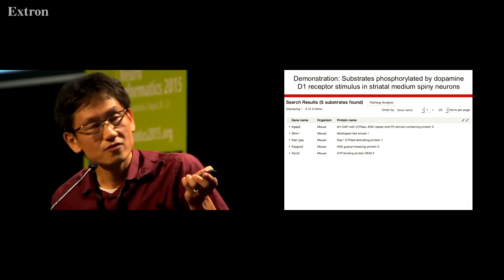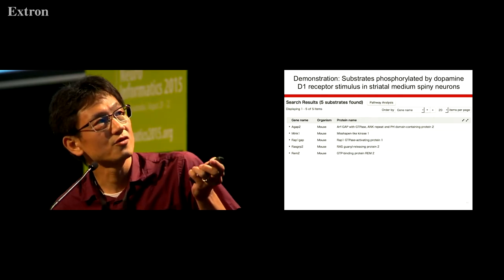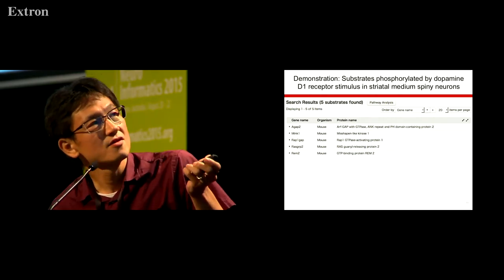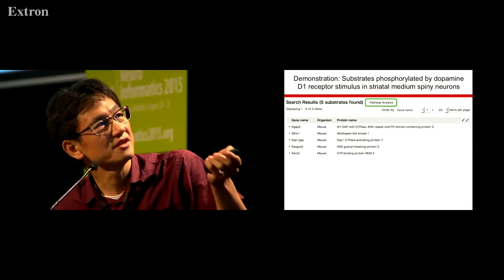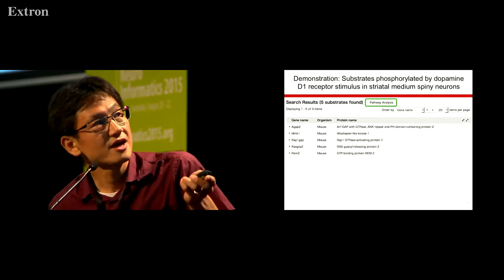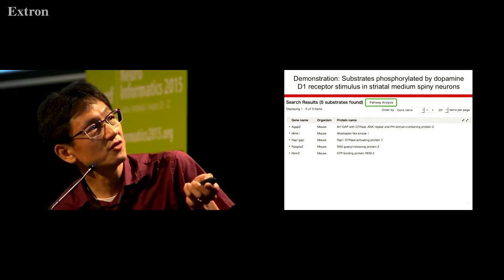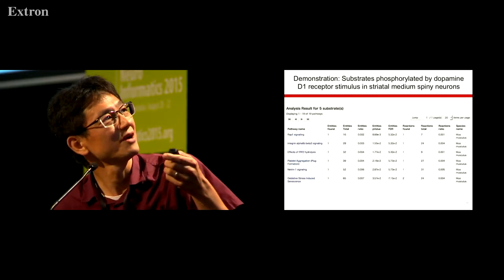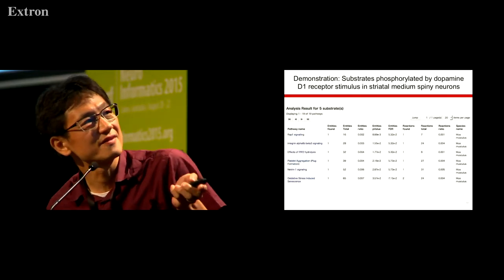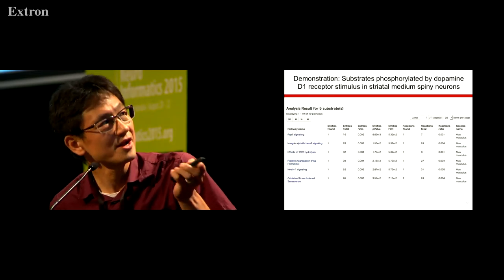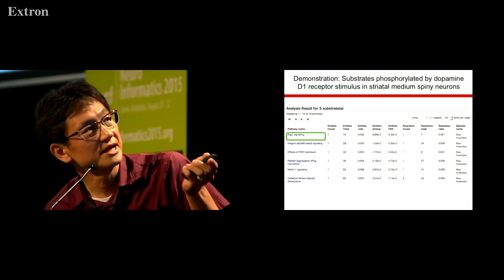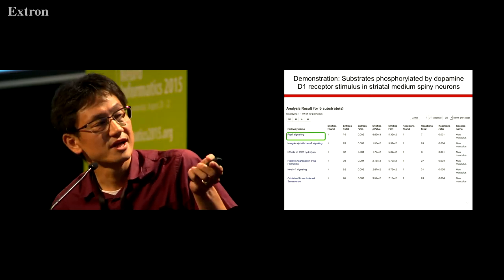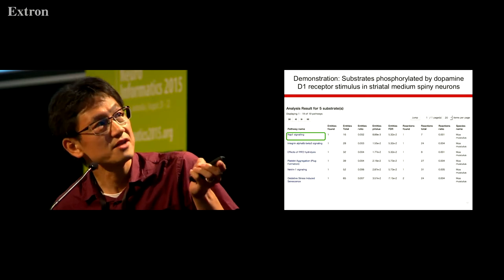We have a good function for pathway analysis. By clicking this button, the database returns the result of the pathway analysis with the significance value. From the result, we can see that RAP1 signaling is very likely a target of the dopamine D1 receptor stimulation.